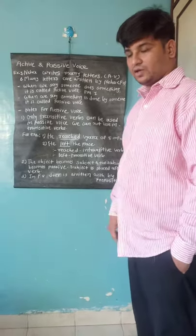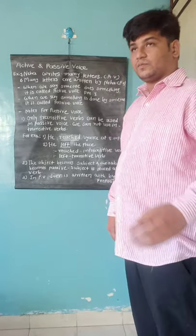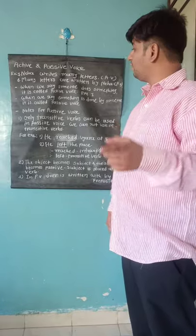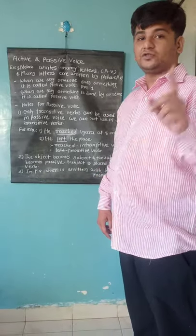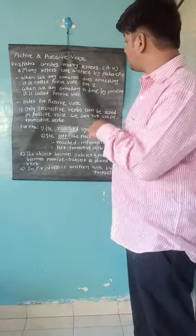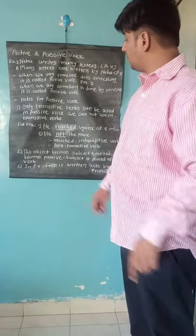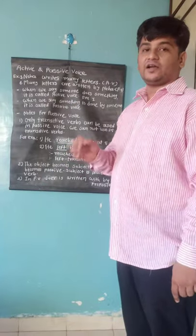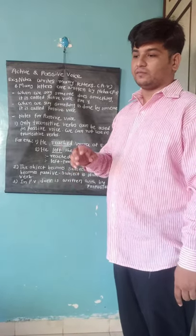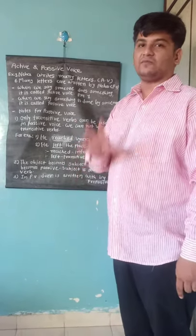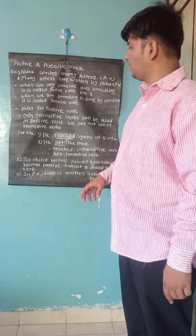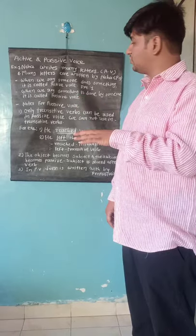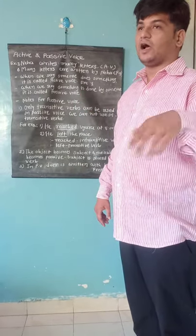Now, what is the difference between both sentences? The first sentence begins with Neha. Neha is the doer, and the doer does something in the sentence. In the second sentence, 'many letters are written by Neha' — something is done by Neha. This shows us the difference between active voice and passive voice.